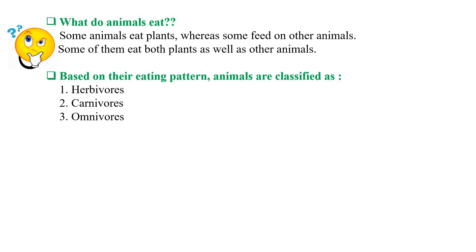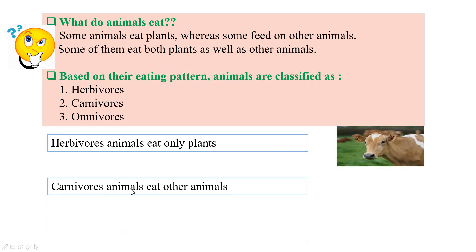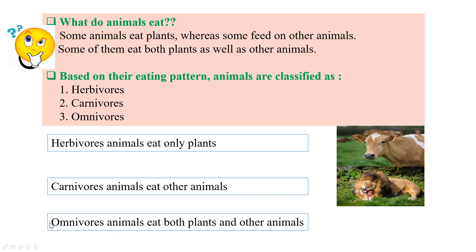Till now we have been talking about what we eat. Now let's talk about what animals eat. Some animals eat plants whereas some feed on other animals, and some eat both plants as well as other animals. Based on their eating pattern, animals are classified as herbivores, carnivores and omnivores. Herbivores animals eat only plants — for example, a cow. Carnivores animals eat other animals — for example, a lion. Omnivores animals eat both plants and other animals — for example, a crow.